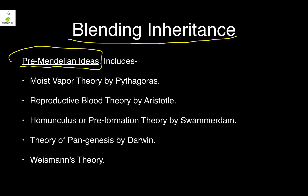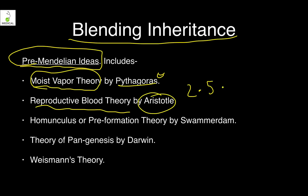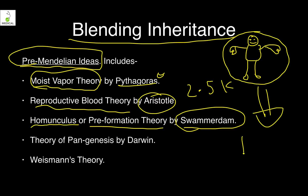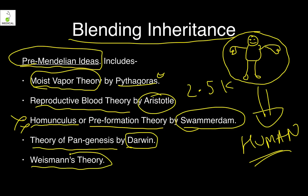Before Mendel, there were several theories. The moist vapor theory was given by Pythagoras, the reproductive blood theory by Aristotle about 2,500 years ago, the homunculus or pre-formation theory by Swammerdam — who proposed that inside every gamete there is a tiny homunculus that grows into a human, which is incorrect. The theory of pangenesis was given by Darwin, and finally Weismann's theory. Just remember these as pre-Mendelian era theories.